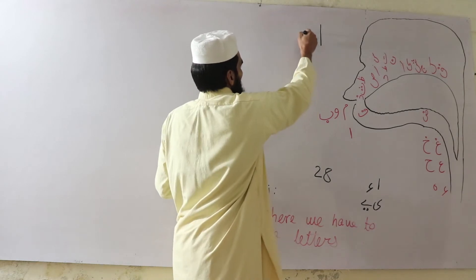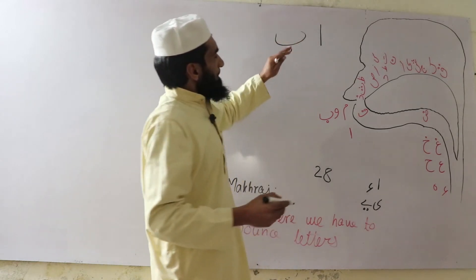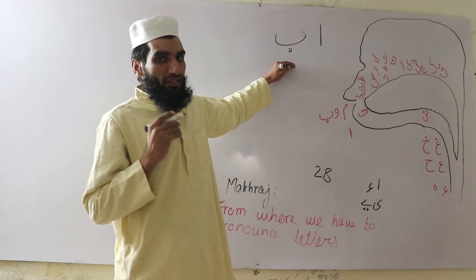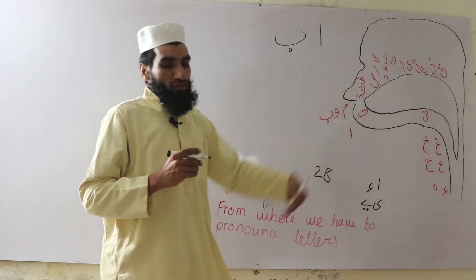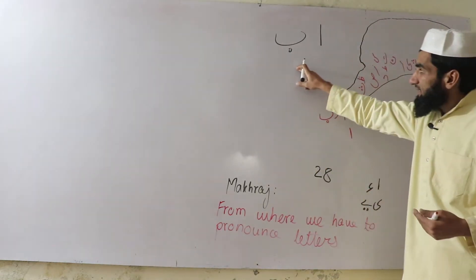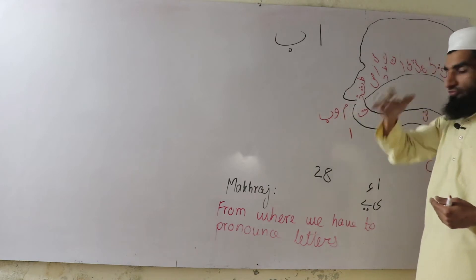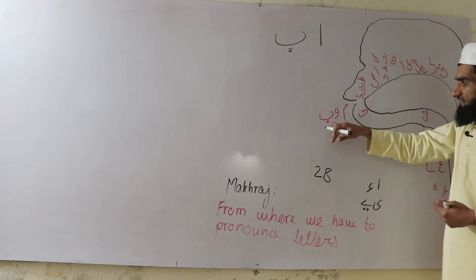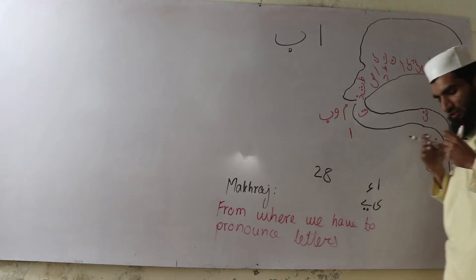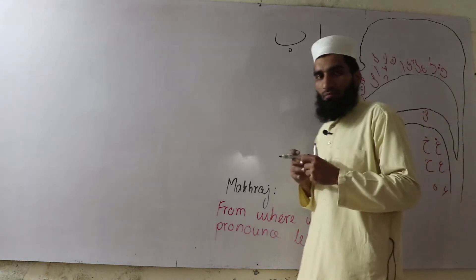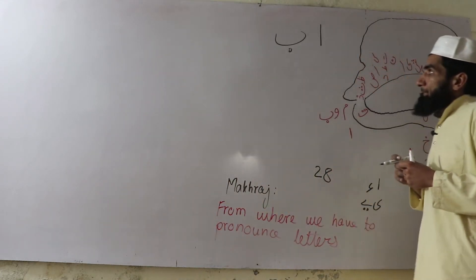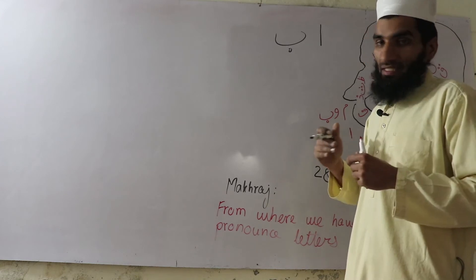Second is Ba. Ba has one dot downside — that is its recognition. Its Makharaj is when we join our lips together: Ba. It is like the letter B in English.